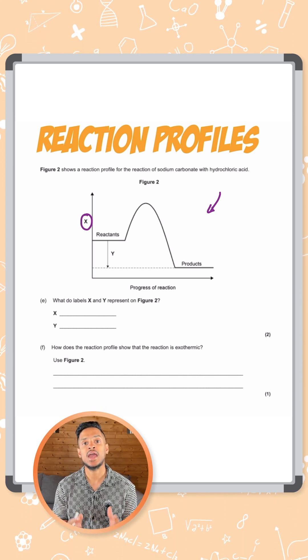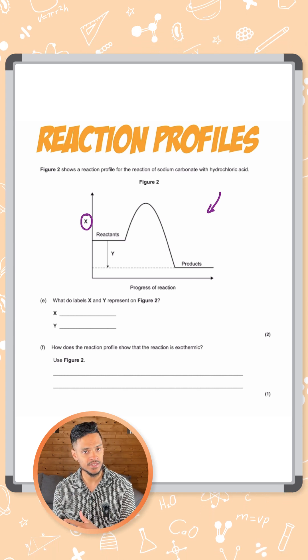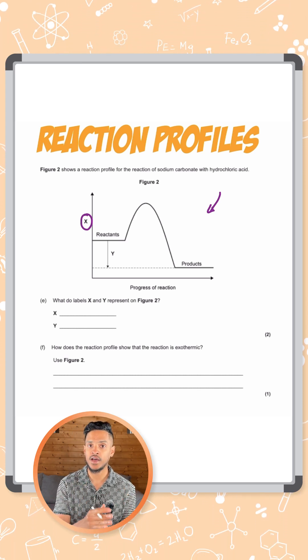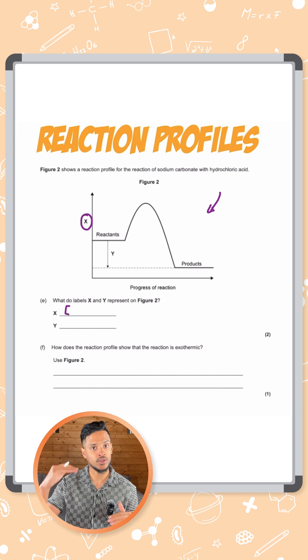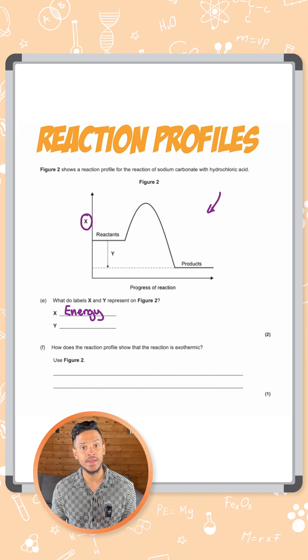So reaction profile basically tells you how energy changes as a reaction progresses. So does it start off high and go low or does it start off low and then go high? So label X here is energy. That's what the Y axis represents.